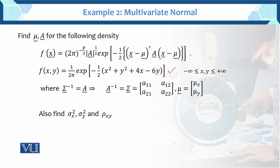This is the PDF of the multivariate normal distribution and we want to find the mean vector, A matrix, sigma squared x, sigma squared y, and the correlation. We know that A equals sigma inverse, and A inverse equals sigma. This is the mean vector.